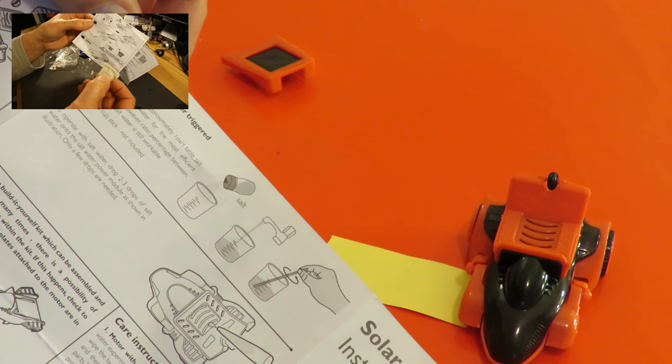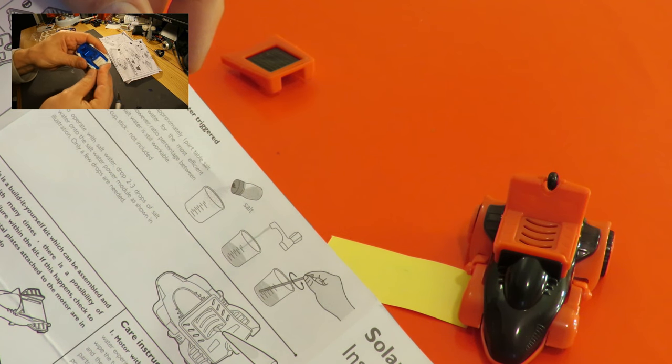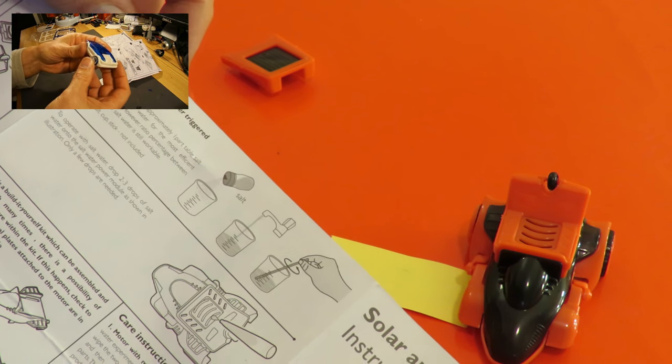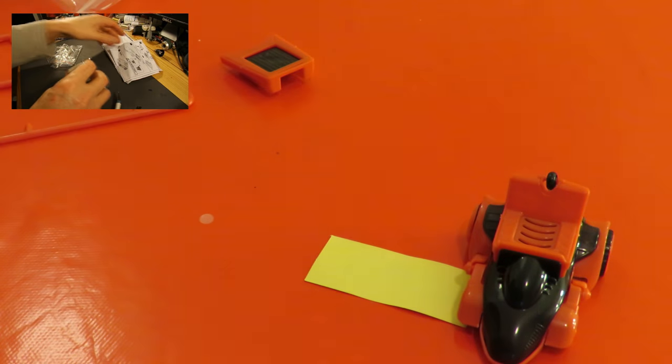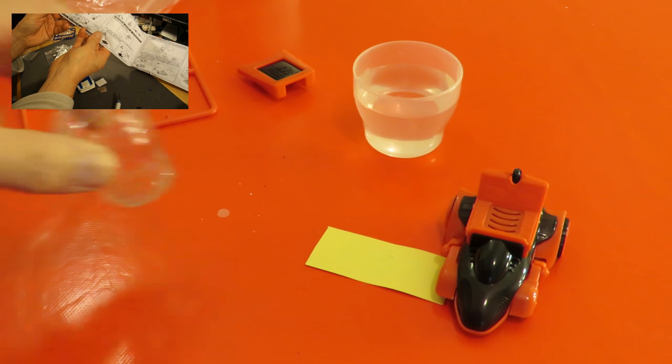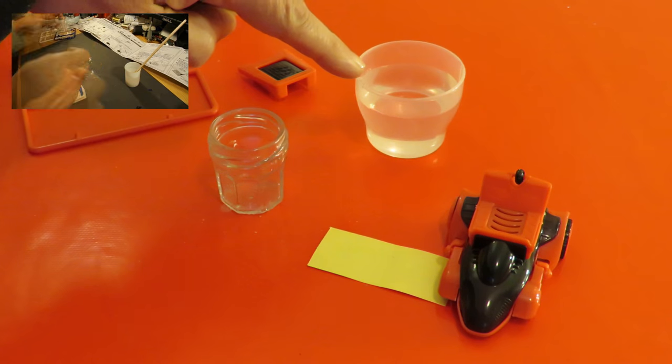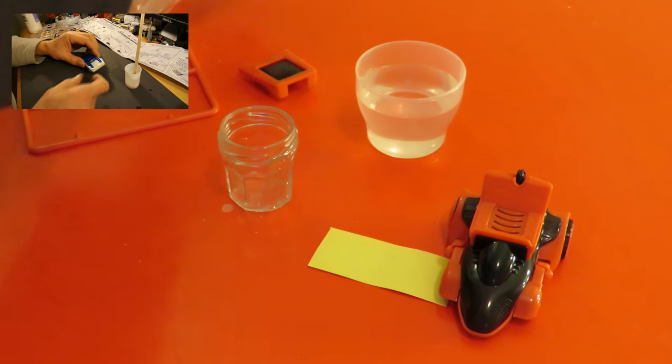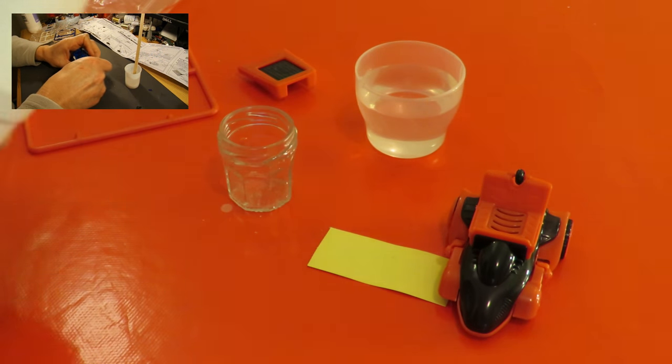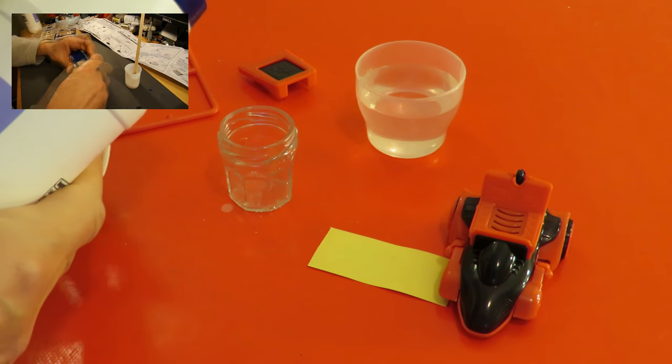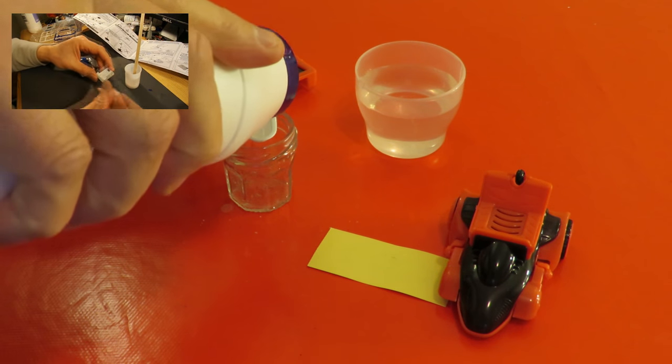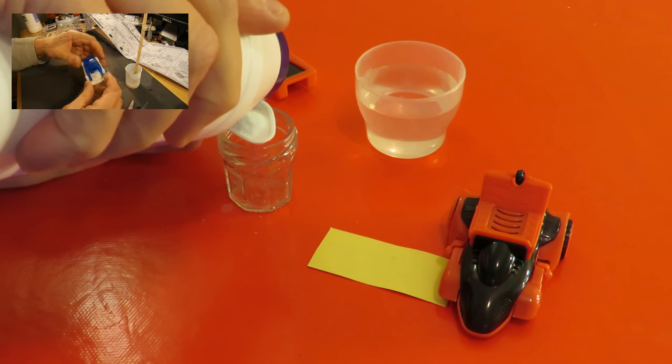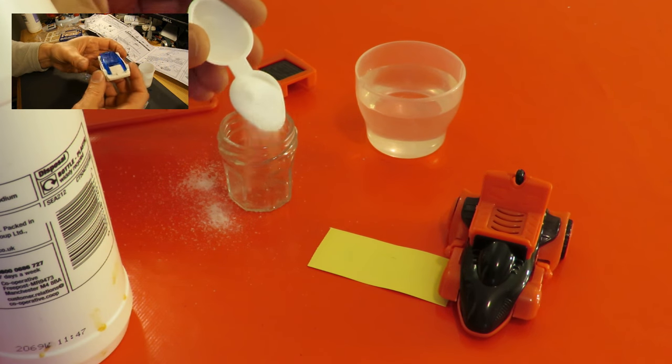One part salt to five parts tap water. We don't need very much, you'll need a couple of drips to get it going. I'll go and do that. A cup of water, a little empty jar, table salt.